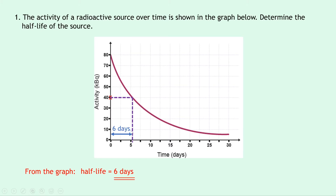Notice that we've only done one half-life here, but if you wanted a more reliable answer, you could find maybe one or two more half-lives and find the overall average half-life. But in this question, because it didn't say to determine the average half-life, doing it once is sufficient.